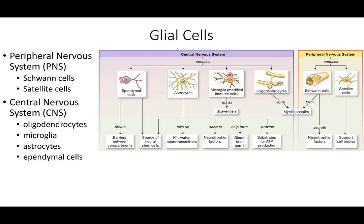Our microglia can be thought of as the neural immune cells. They act as scavengers, breaking down damaged tissue and removing waste. Those are our accessory — or glial — cells.